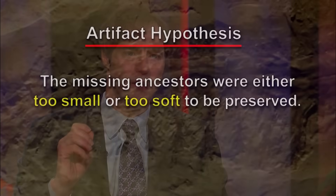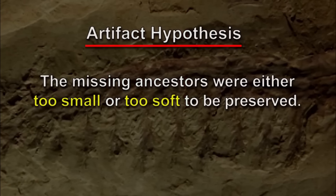So what people are now saying is that the fossils are missing because of incomplete preservation. In particular, the idea put forward is that the missing ancestors weren't preserved because they were either too small or too soft to have been preserved. That's the version of the artifact hypothesis that's still in currency. And yet there's been another discovery in China that has really challenged that idea — in fact, challenged it in a very fundamental way.